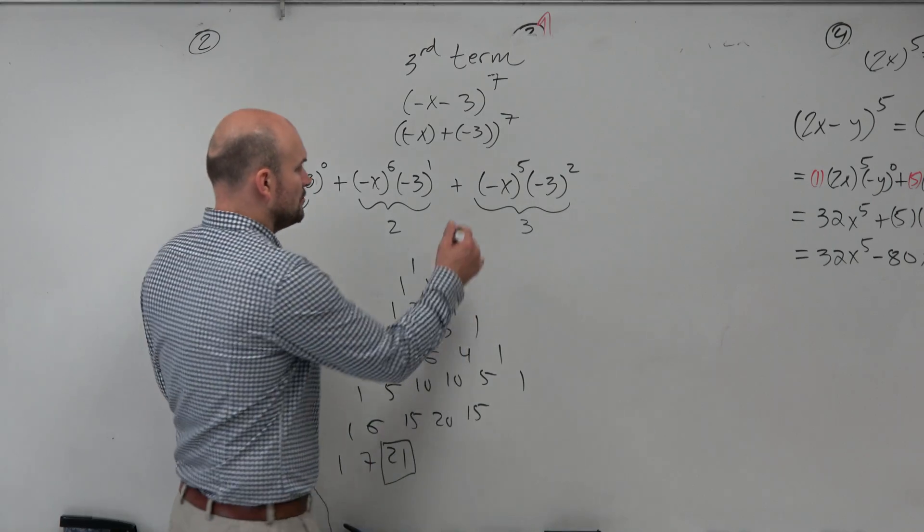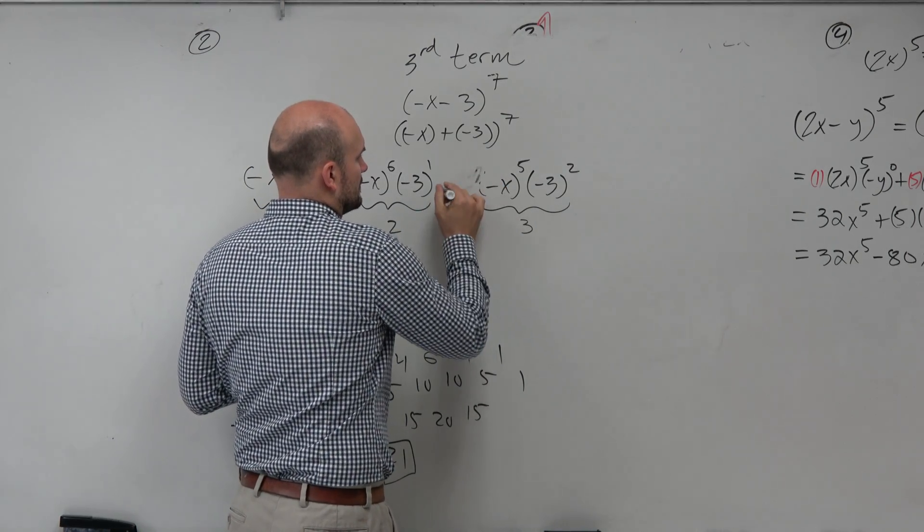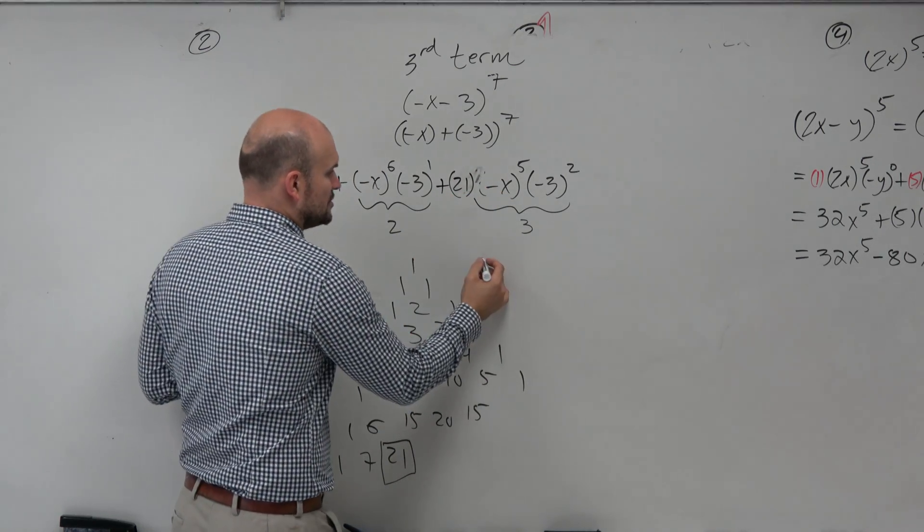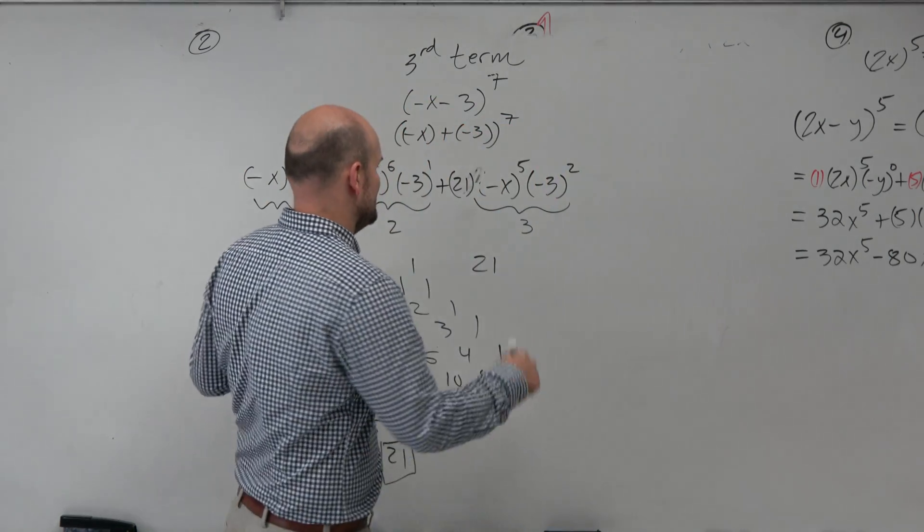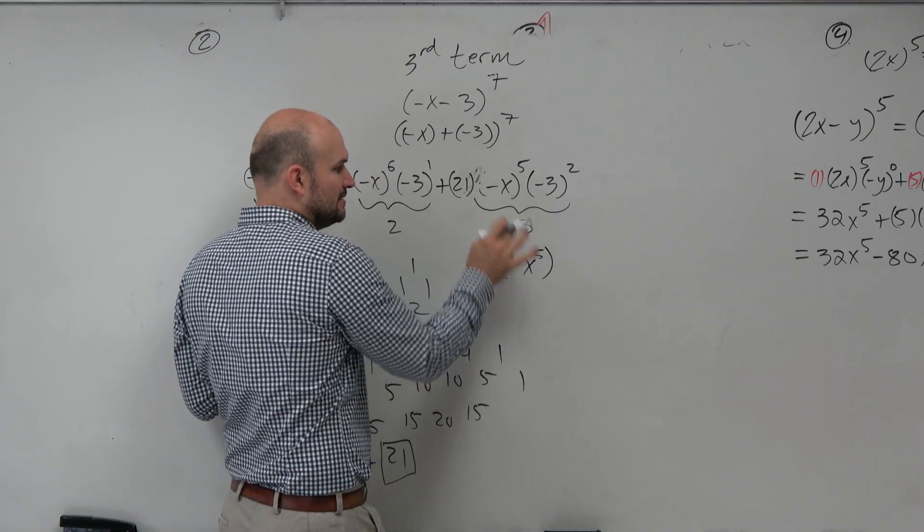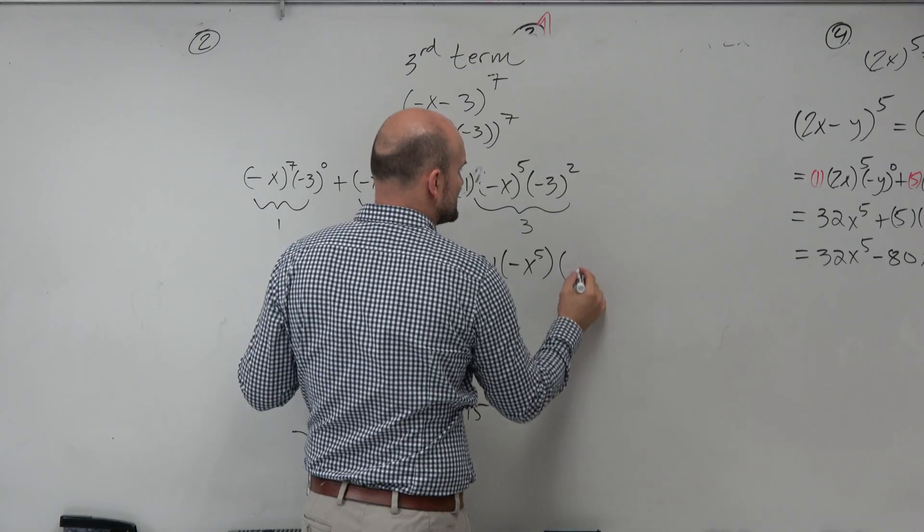So now we see that that number is 21. So now we just need to simplify everything. So we have 21. Negative x to the fifth is? Negative x to the fifth. Just written like this. And then negative 3 squared is going to be a positive 9.